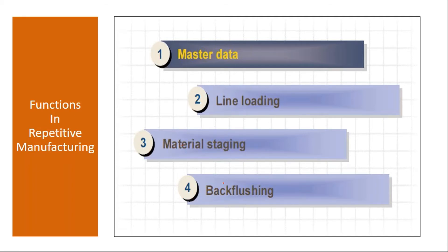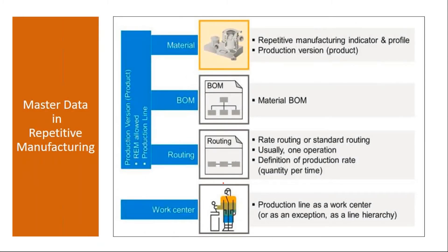First, we create the required master data. For the material master, you need to make certain extra settings — you need to activate the repetitive manufacturing indicator and assign a suitable profile. I will show this in the system. You also need a production version.